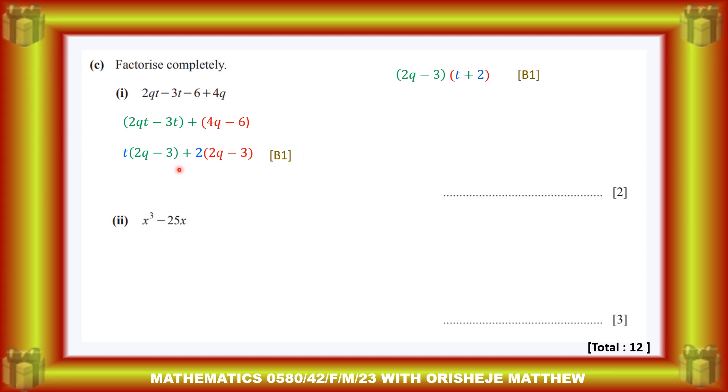Then the multiplier, the coefficient of each of the brackets, will be put together to form one bracket in the red. So you have (t + 2). So that is how you have the 2 marks according.